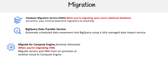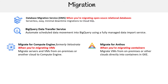Then we have Migrate for Compute Engine and Migrate for Anthos. These are two you want to remember when you want to migrate from on-prem into Google Cloud. You're going to be using Compute Engine for VMs, and for Anthos you're going to be using containers. You have to remember the difference between these two because they will show up in a lineup for sure.